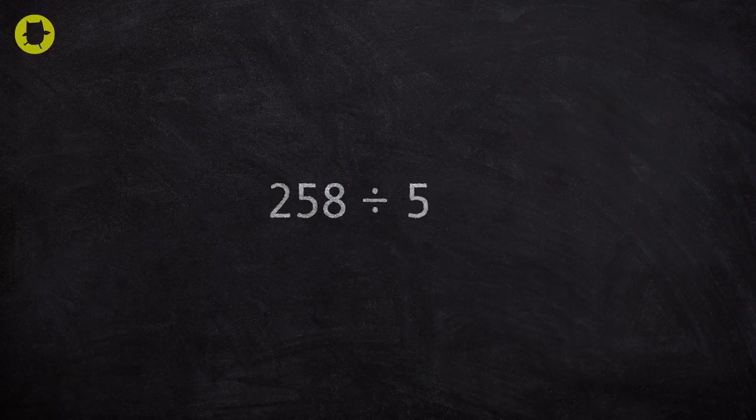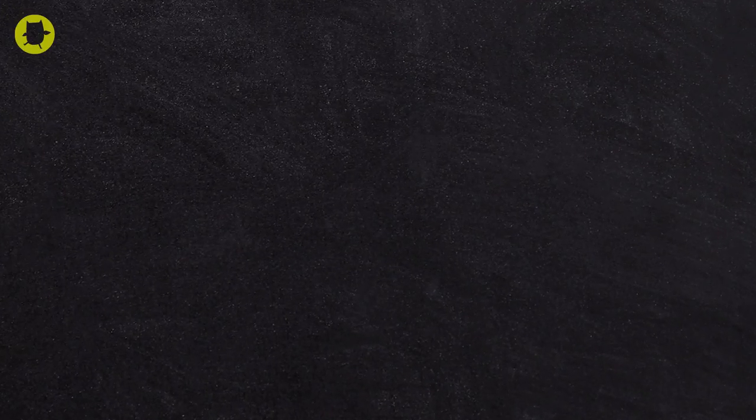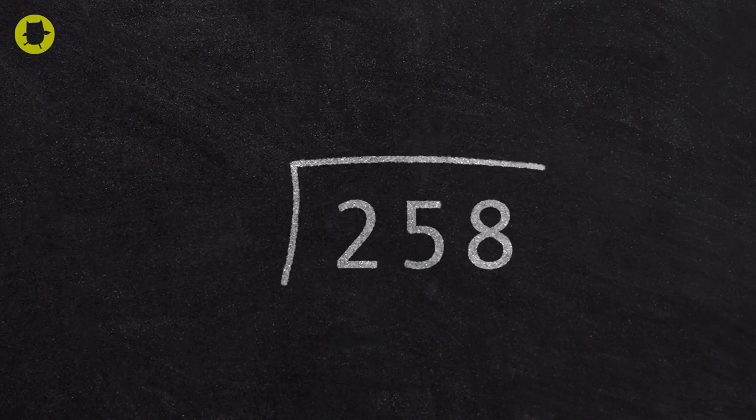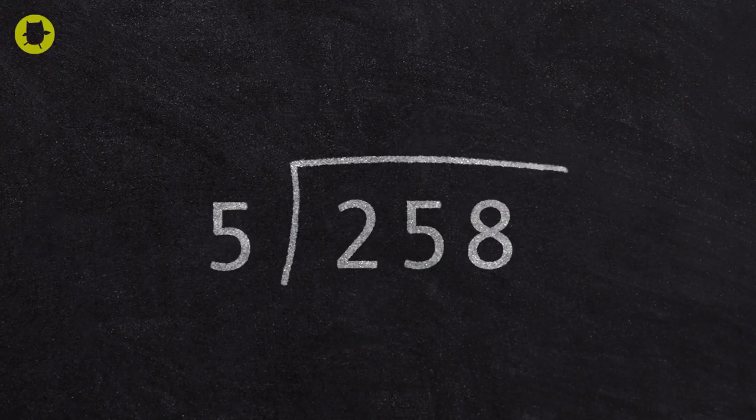Now let's look at how to do short division when the numbers aren't divisible exactly. Let's take the calculation 258 divided by 5. In this example, the dividend is 258 because it is the number divided by the divisor, which is 5. We have to set the calculation out like this.